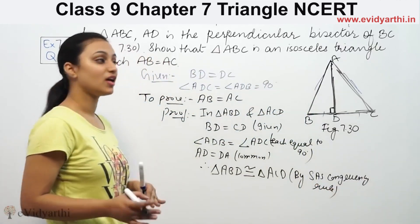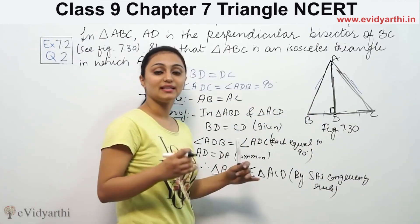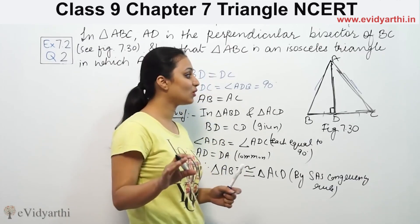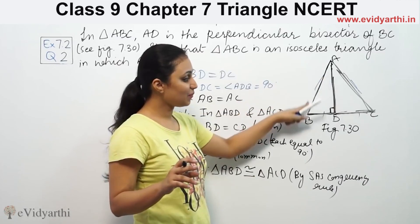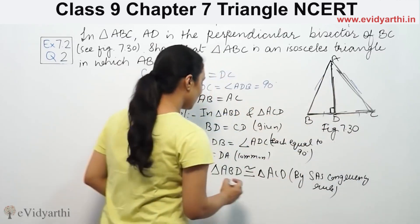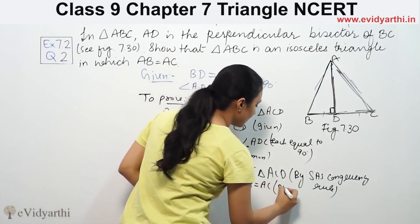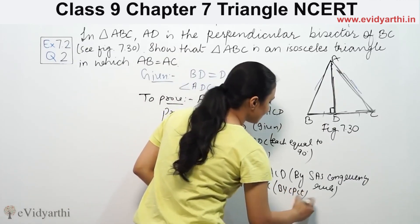We have two triangles congruent. That means the corresponding parts, that means side AB is equal to side AC. Therefore, AB will be equal to AC by CPCT. Hence proved.